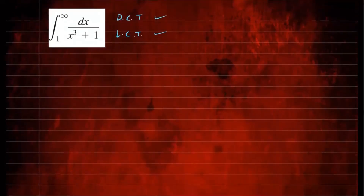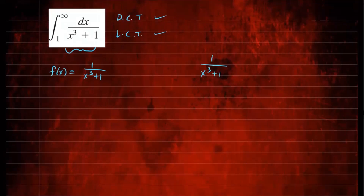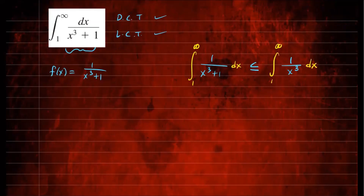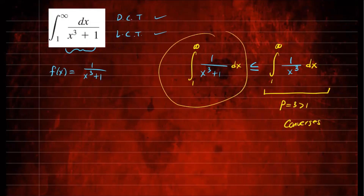Let's first illustrate the direct comparison test. We compare with a function g. Let f(x) be 1 over (x cubed plus 1). We create an inequality and put 1 over x cubed on the right side, omitting the plus 1 from the denominator. So f(x) is less than or equal to 1 over x cubed. If you integrate 1 over x cubed from 1 to infinity, this is a p-integral where p equals 3, which is greater than 1, so it converges. We found something that lies above the function we're comparing — so by the direct comparison test, this integral converges.